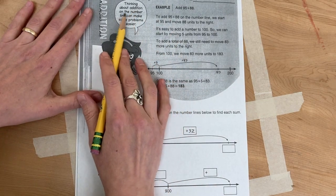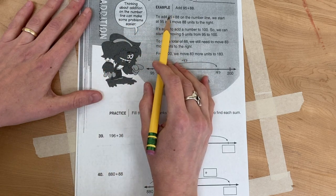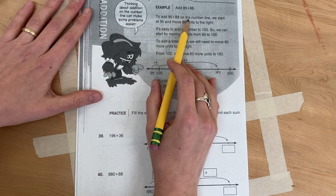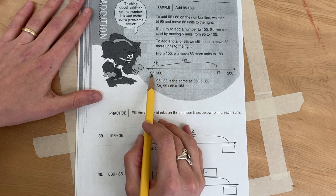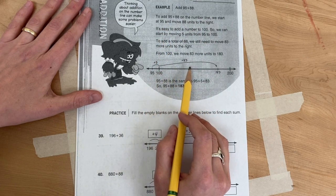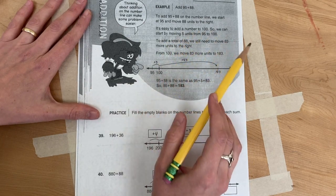Thinking about addition on the number line can make some problems easier. To add 95 plus 88 on the number line, we start at 95 and move 88 units to the right. It's easy to add a number to 100.